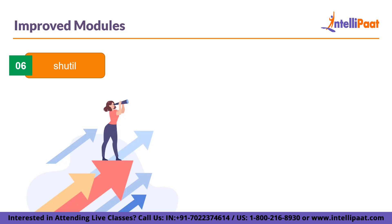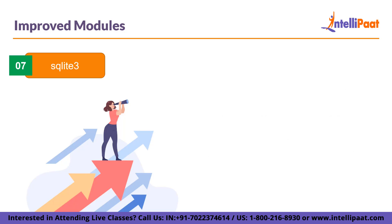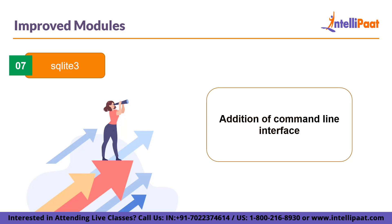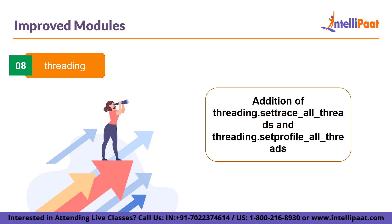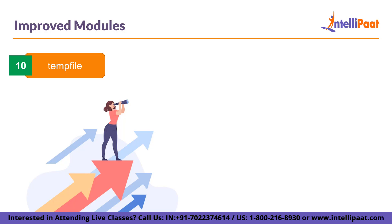For shutil, shutil.make_archive will now pass root directory arguments to custom archivers that support it. For the sqlite3 module, there is an addition of a command line interface, as well as addition of autocommit in connection and autocommit in the connect method for transaction handling. In the threading module, threading.settracer_all_threads and threading.set_profile_all_threads are added to set tracing and profiling functions in all running threads. The unicode_data module has been updated to Unicode version 15.0.0. Finally, for tempfile, an optional parameter delete_on_close in tempfile.NamedTemporaryFile will be available.